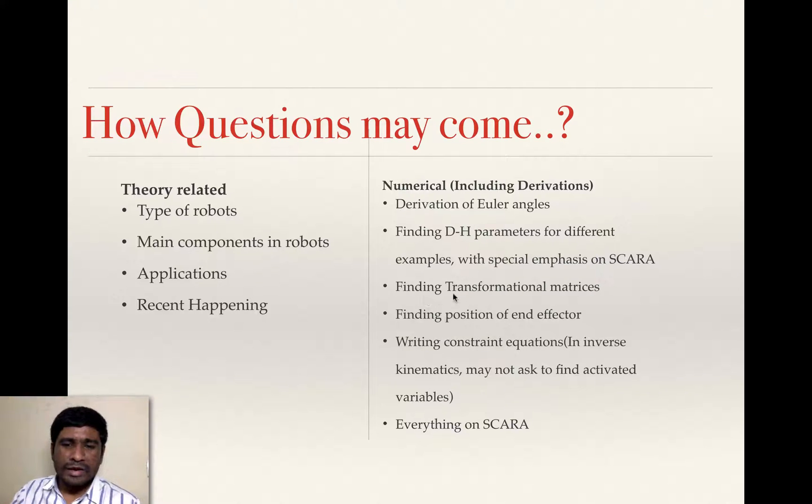And then finding transformational matrices. Sometimes examiner may ask you to find out the end transformation matrix for this particular mechanism or robot. How to find out that? First, we need to identify different coordinate systems. And you write the DH parameters for different links. And substitute these DH parameters in the transformation matrix of each individual link. And you multiply those all individual links transformational matrices. So that finally you will arrive at the final transformational matrix. We need to follow that procedure.